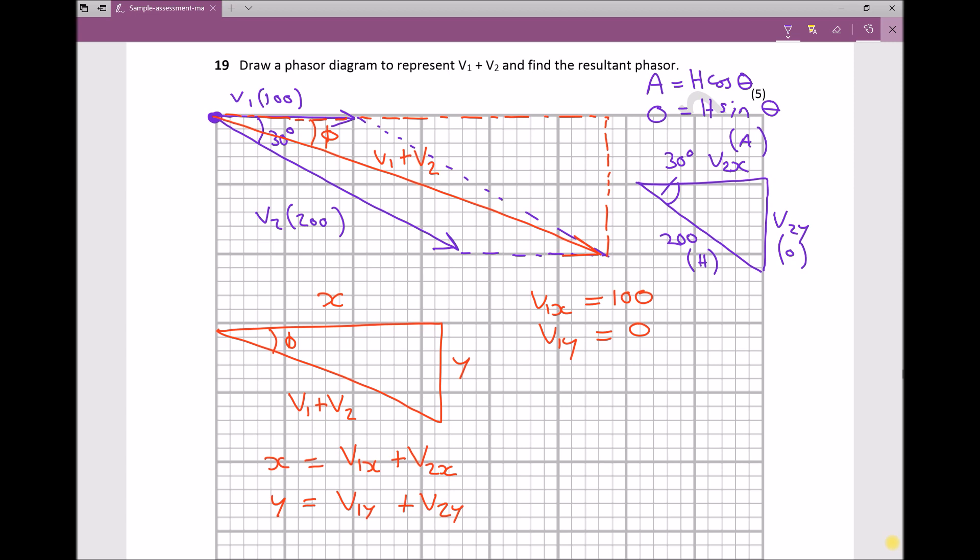V2x, the x component of V2, is the adjacent on that triangle. Adjacent equals hypotenuse cos theta. Our hypotenuse is 200 and theta is 30. Therefore, V2x equals 200 cos 30, which equals 173.2.